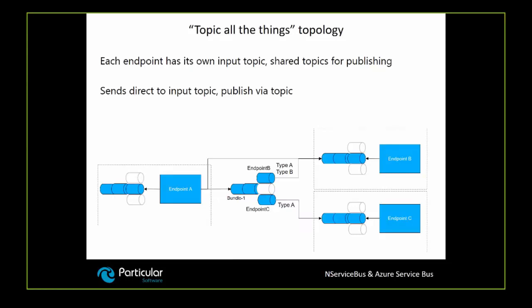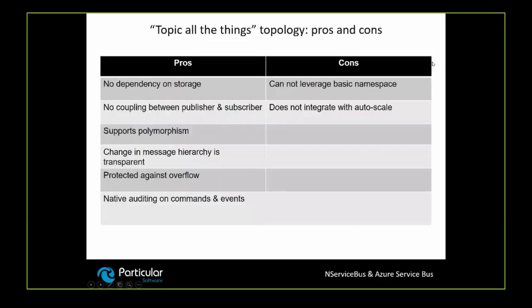Looking to the future, one possible topology — we call it 'topic all the things' — would replace input queues with input topics. These input topics would have a single subscription that's always there, so a topic with a single subscription works exactly the same way as a queue. But we could add new subscriptions to allow nice native auditing. The trade-off is that it has the same pros and cons as the forwarding topology, except you'd also be able to do native auditing on commands, but you'd lose the capability to use autoscale.